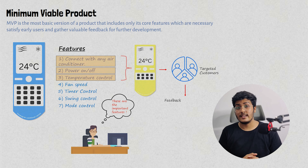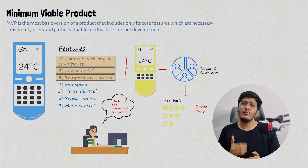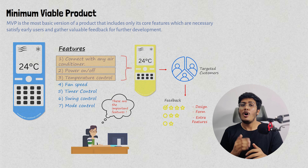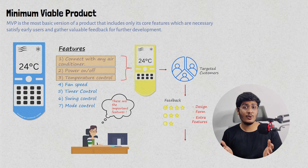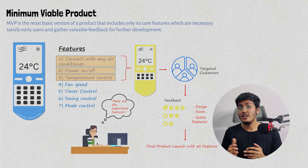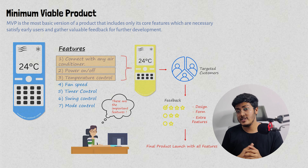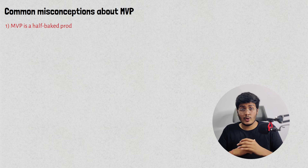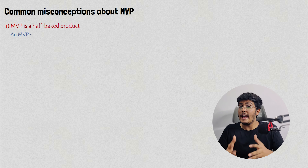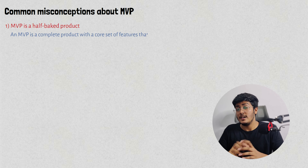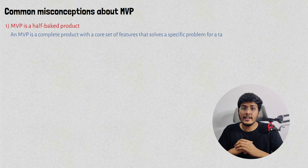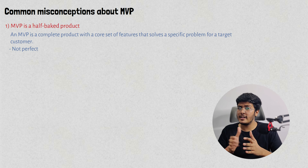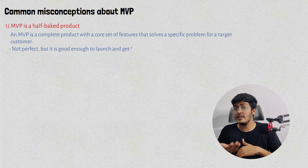For example, users can give feedback regarding the design of the remote, the form of the remote, or what extra features they need. On the basis of this feedback, Jack can improve his product and get into mass production to launch his product successfully to a larger group of his targeted audience. Many people believe that MVP is a half-baked product that is not ready for the market. However, this is not the case. An MVP is a complete product with a core set of features that solves a specific problem for a target customer. It is not perfect, but it is good enough to launch and get feedback from the user.